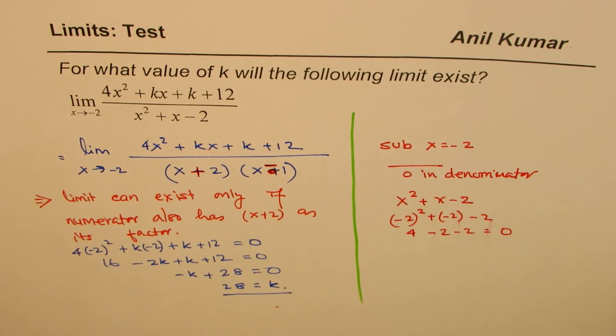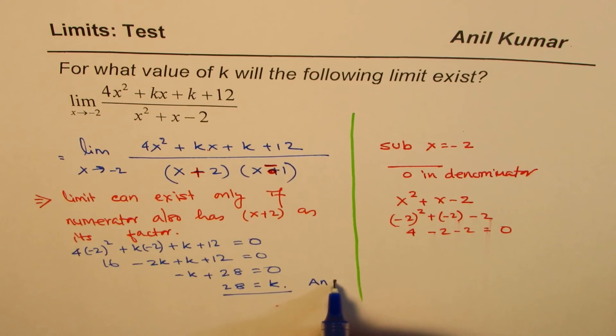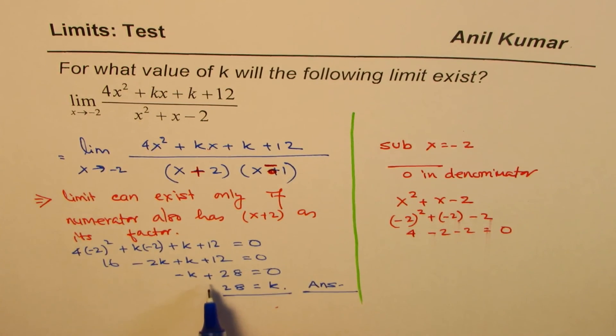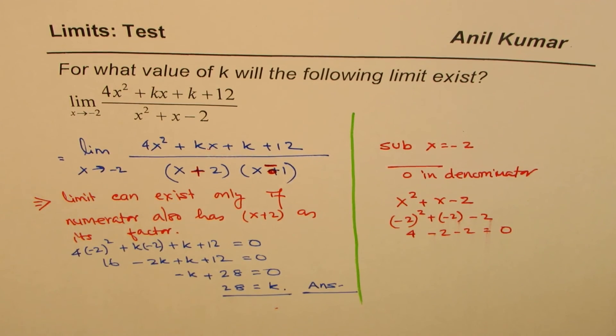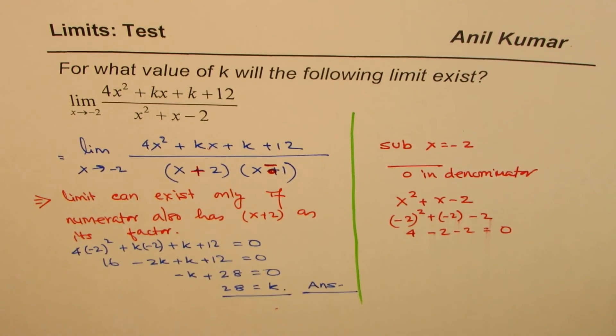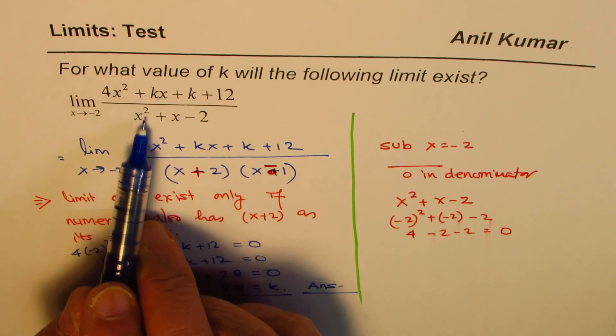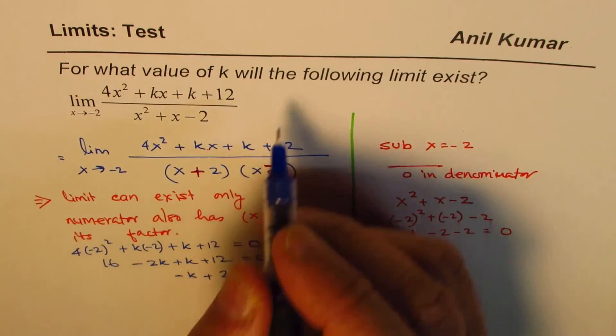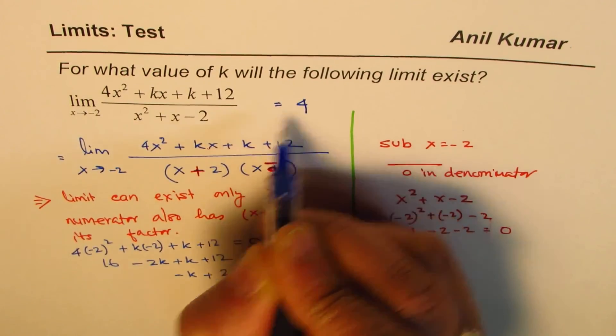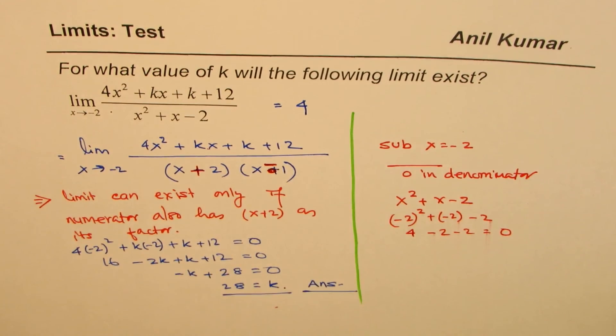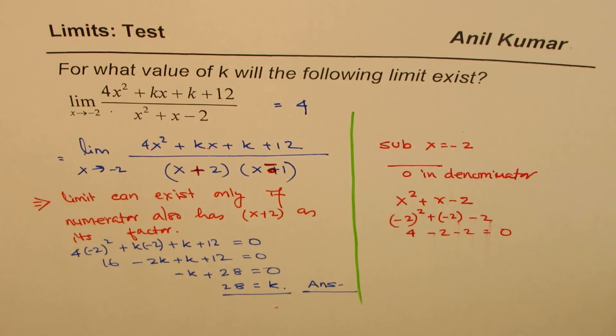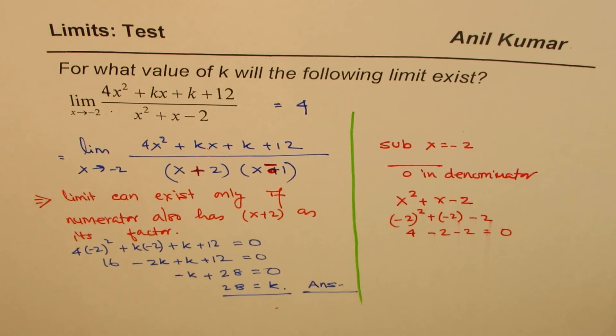So the value of k is 28. That is the answer. So for k equals 28, this limit will exist. Now, can you tell me what is going to be the limit? Since the degrees are same for the numerator and denominator, you should get answer as 4. So 4 over 1 is going to be the limit of this function once k value is 28.